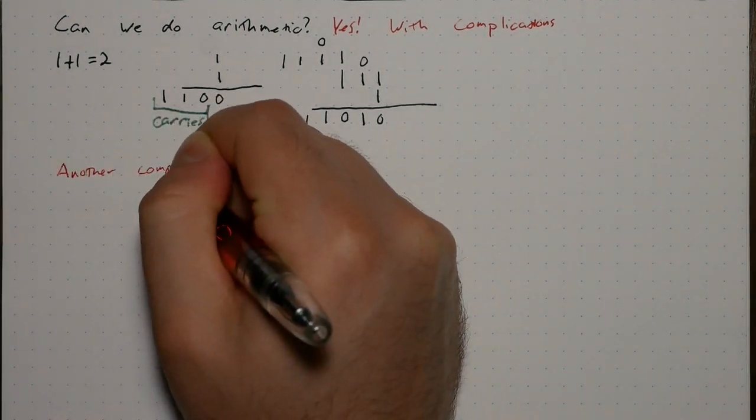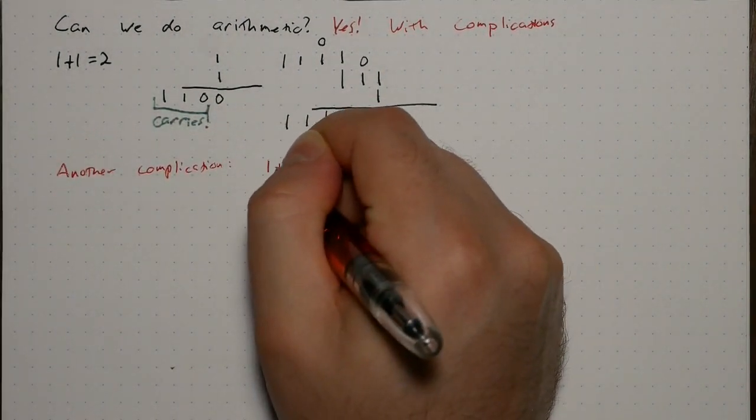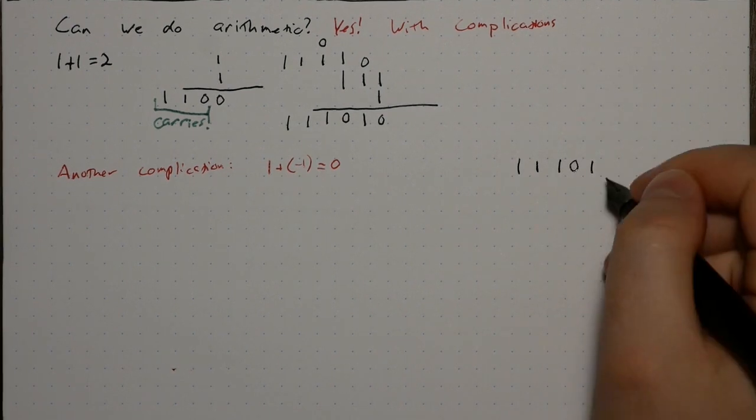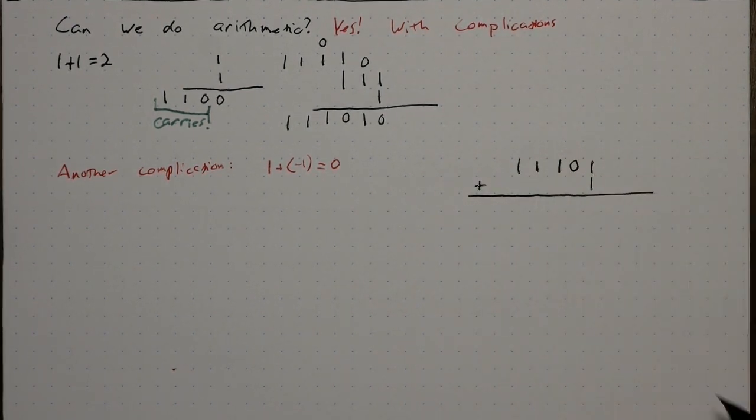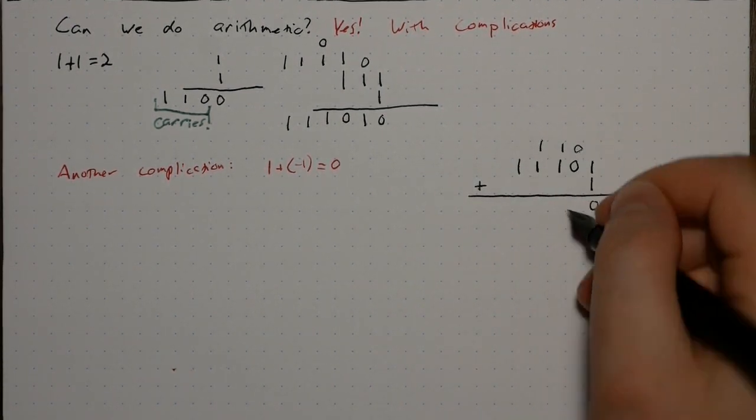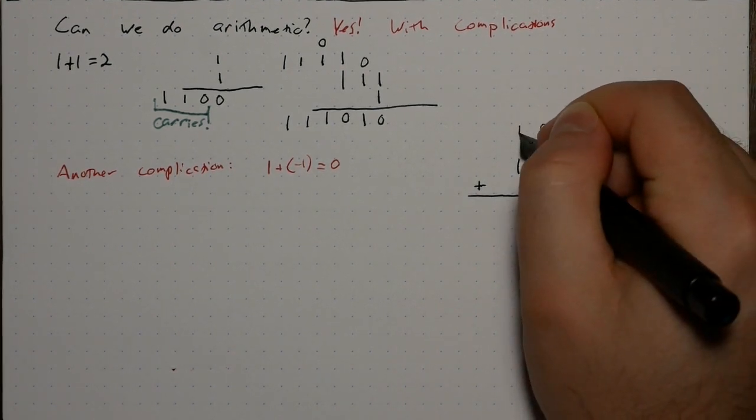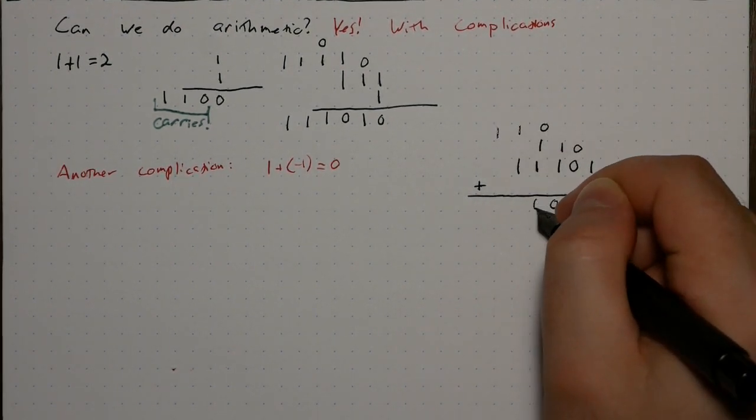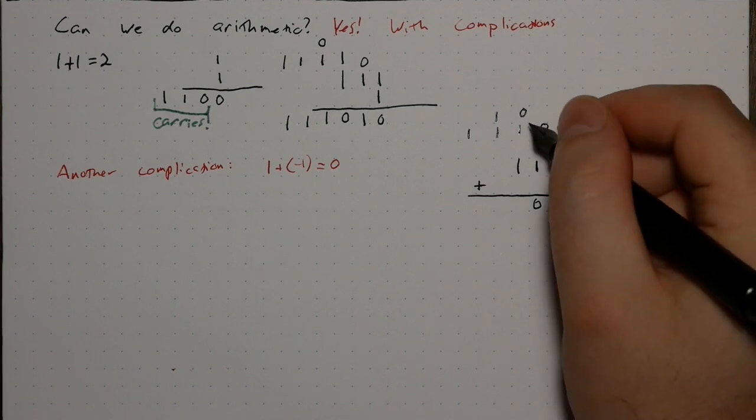Okay, but there's another complication. We know that 1 plus negative 1 is 0. So what happens in base negative 1 plus i? Well, 1 and 1 is 0, carry 110. 0 and 0 is 0. 1 and 1 is 0, carry 110. 1 and 1 is 0, carry 110. 1 and 1 is 0, carry 110.